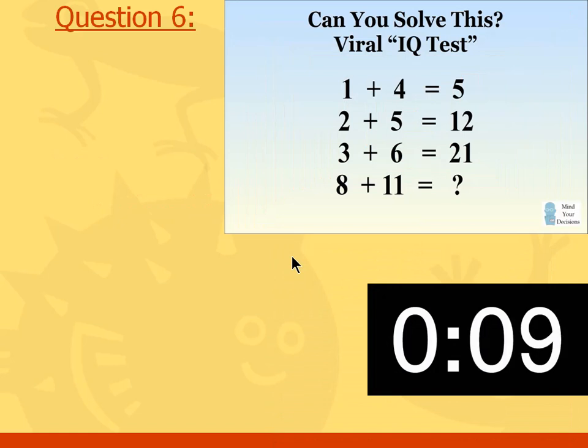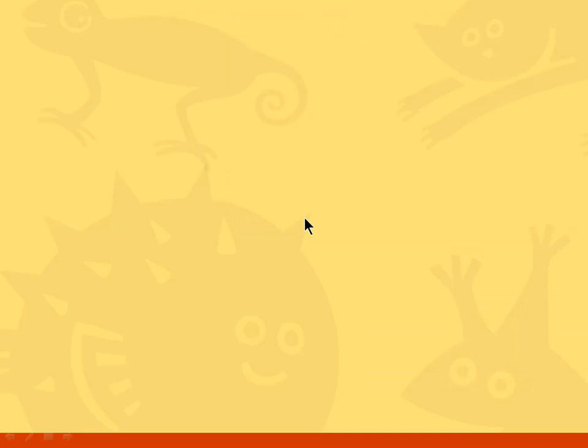Question number six: can you solve this viral IQ test? 1 plus 4 is 5, 2 plus 5 is 12, 3 plus 6 is 21. Then what is 8 plus 11? The answer is 14.